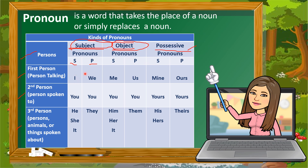In first person — the person talking — we use 'I' if it is singular and 'we' if it is plural for subject pronouns. In object pronouns, we use 'me' if it is singular and 'us' if it is plural. For second person — the person spoken to — we use 'you' in both subject and object pronouns, whether singular or plural.